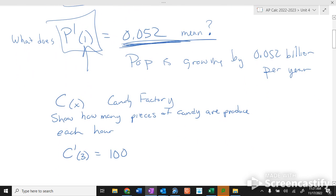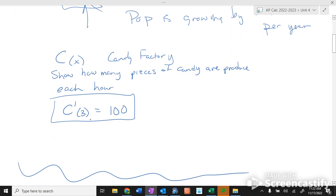Candy factory. It's not the candy factor, it's candy factory. So let's say that we know that the first derivative of the candy factory at 3 hours equals 100. C prime of 3 means that they're producing candy at a rate of 100 pieces per hour three hours after it starts.